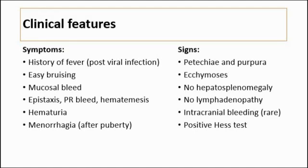The clinical features of ITP include symptoms such as a history of fever, which indicates post-viral infection within the past 1 to 2 weeks. Patients can also present with easy bruising, mucosal bleeding like nosebleed or gum bleeding, epistaxis, perrectal bleed, and hematemesis, which means vomiting blood.